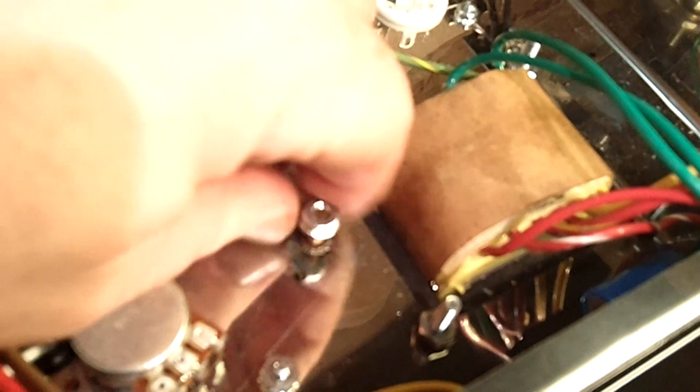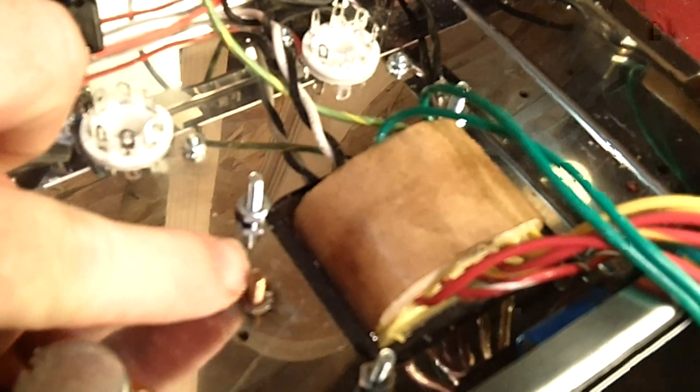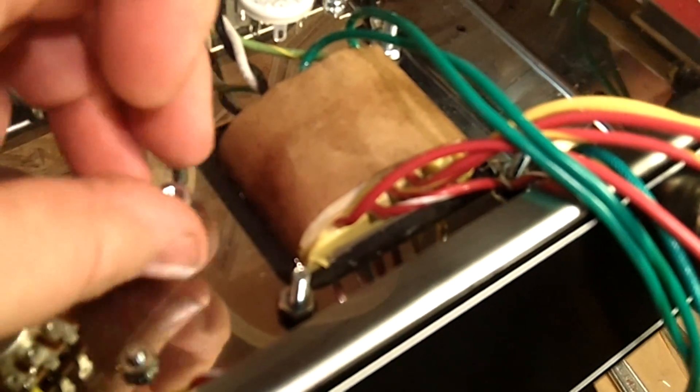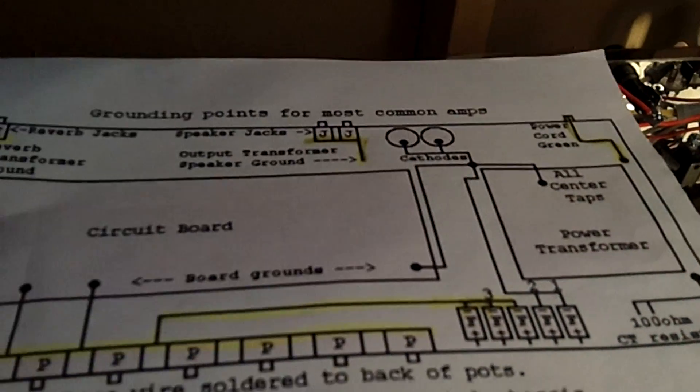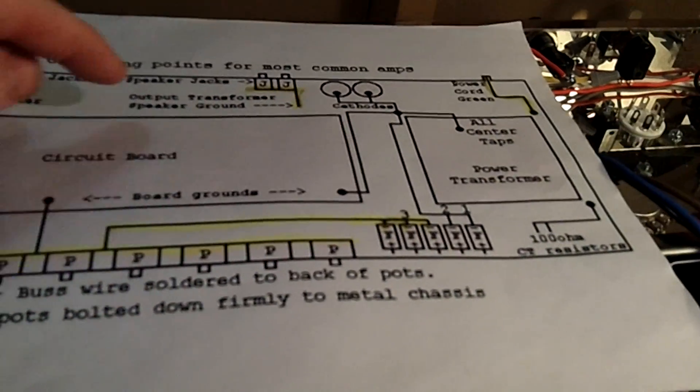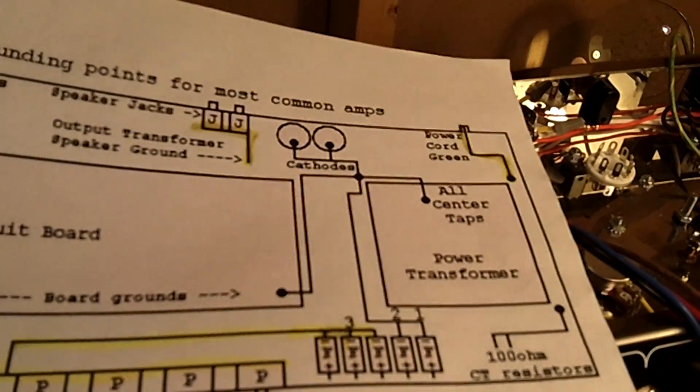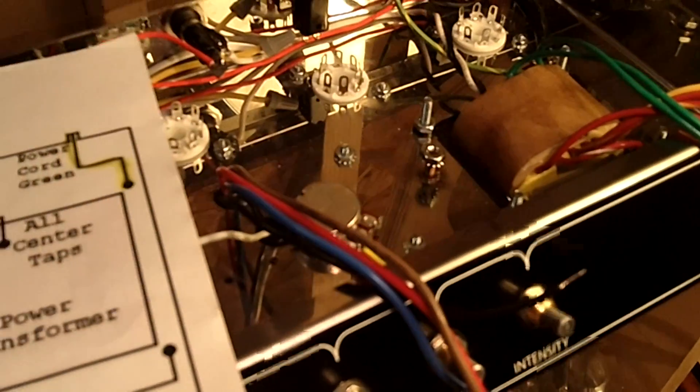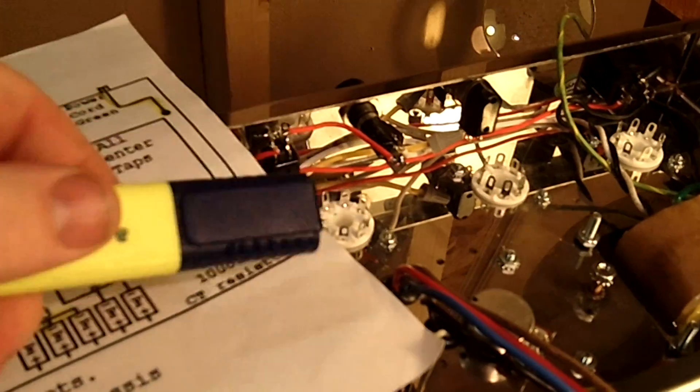You'll see on our chassis we actually have a bolt that's welded into the chassis for a ground. That's similar to a star ground, but our diagram is going to be a little bit different. Our power tubes and some of those grounds go to a different place, so just be sure and follow our grounding diagram, the one that's available in the plans for knowing which wires and which grounds go to this welded post and which don't.